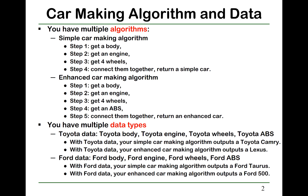Now you want your algorithm to work with multiple data types. For example, with Toyota data — including Toyota body, Toyota engine, Toyota wheels, and Toyota ABS. With Toyota data, your simple car-making algorithm will output a car, say Camry. And with Toyota data, your enhanced car-making algorithm will output a car, say Lexus.